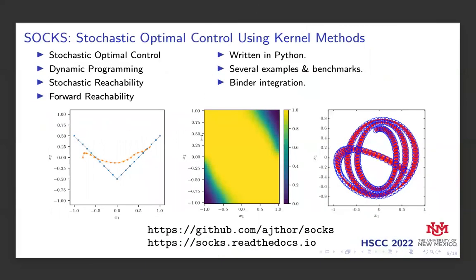In this talk, we present a demonstration of our toolbox for stochastic optimal control and reachability using kernel methods. Our toolbox uses a data-driven approach to do stochastic optimal control, including dynamic programming and reachability to assess safety. It's written in Python, and we have included a number of examples available in the documentation that showcase the capabilities. Our examples have binder integration, meaning you can run them interactively in the browser without having to install anything.